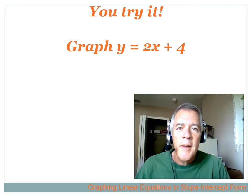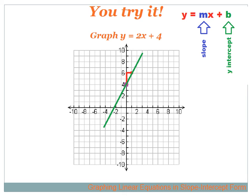Now you try this one. Graph y equals 2x plus 4. We're lucky — it's already in slope-intercept form. The slope is 2, and the intercept is 4. Mark the intercept at positive 4, then use the slope of 2, which is positive 2 over positive 1: rise 2, run 1. That gives us another point. Draw a line between the two points, and that represents y equals 2x plus 4.